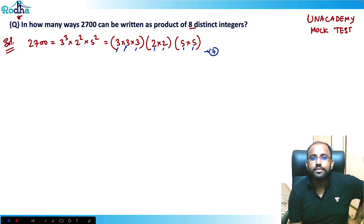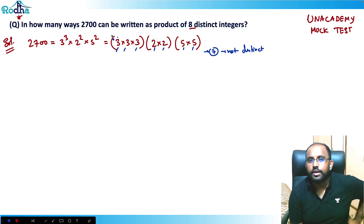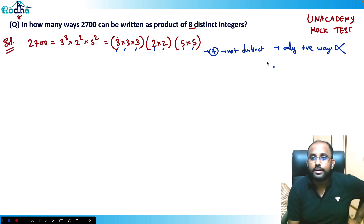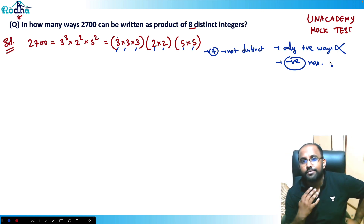These seven numbers are not all distinct, and I only have seven, not eight. Also, numbers like 3 are repeating. So there is no way to write 2700 as a product of eight distinct integers using only positive integers. I need to take the help of negative numbers.